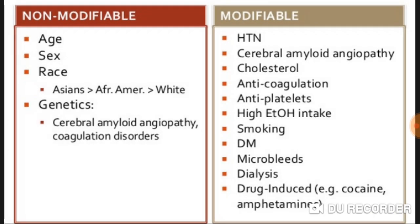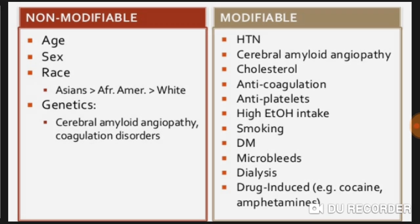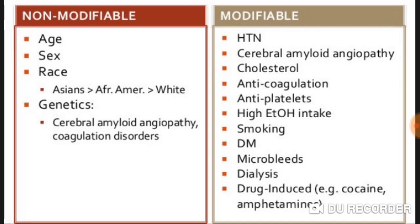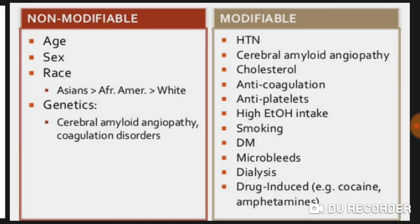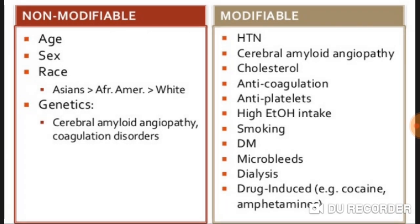My patient's age is 50 years, sex female, race Indian. She does not have cerebral amyloid angiopathy or anticoagulation disorders in her history. The modifiable risk factor is hypertension — she is hypertensive but on irregular follow-up, and that is why she is suffering from this condition.